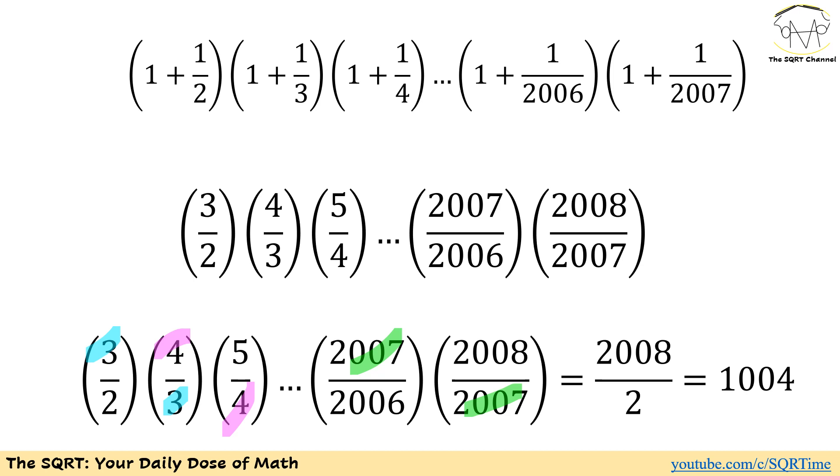To solve this problem I'm going to do something really quick. Let's start with finding what we have for each term. When we have 1 plus 1 over 2 we can write it as 3 over 2. For 1 plus 1 over 3 we can write it as 4 over 3 and so on so forth.